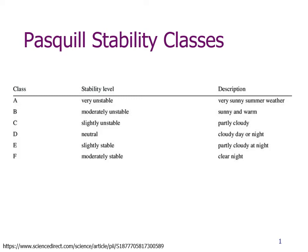Atmospheric stability is described using the Pasquill stability classes, one of six letters from A to F, kind of like letter grades, where A is very unstable conditions, which you might see on a very sunny summer day, to F, which is really very stable, which corresponds to a clear night.